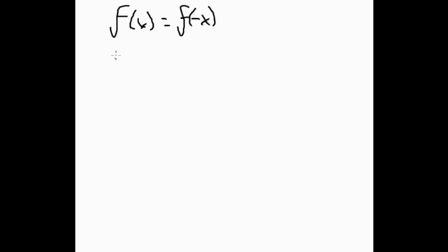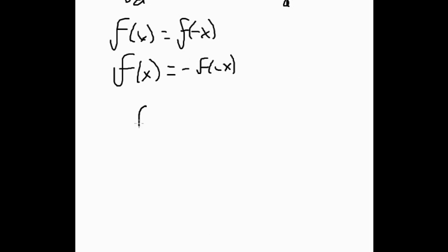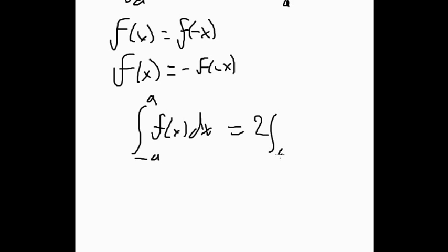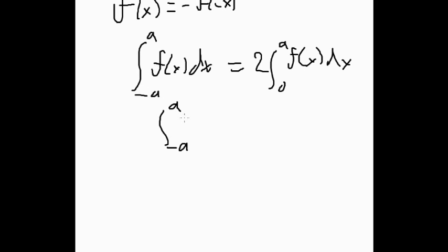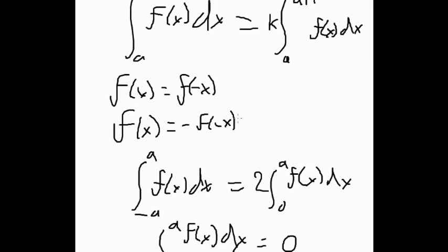Another example of symmetry involves odd and even functions. An even function satisfies f(x) = f(−x), and an odd function satisfies f(x) = −f(−x). Odd functions are rotationally symmetric about the origin — rotate the graph and you get the same thing. So the integral of an even function from −a to a equals 2 times the integral from 0 to a. If f is odd, the integral from −a to a is always zero, since the areas cancel out.